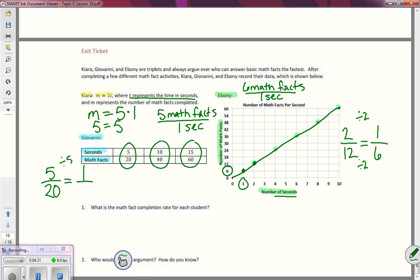So I can see that if I divide both parts by five, I can see that I have one second, I can get four math problems done. 20 divided by five is four. So hers is four math facts per one second.